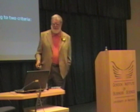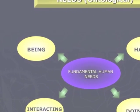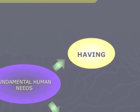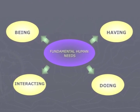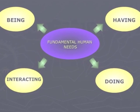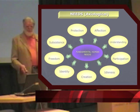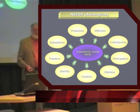We propose to classify needs according to two criteria. First, an ontological or existential criteria: the needs of being, having, the needs of doing, and the needs of interacting. And through an axiological or value vision, we identify what we call the nine fundamental human needs.